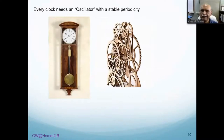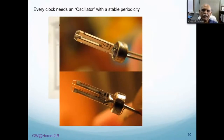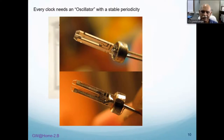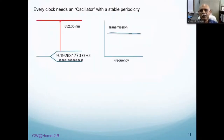Every clock needs an oscillator with stable periodicity like a pendulum, and a set of gears to bring the oscillation frequency down to a second. In a quartz clock, the oscillator is a quartz crystal cut very precisely to a natural oscillation frequency — several kilohertz — and that is divided down to one second by electronic dividers.